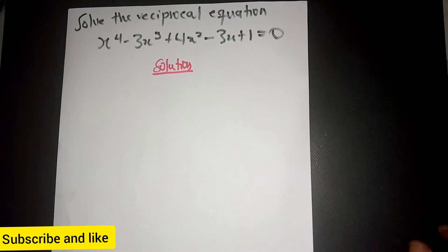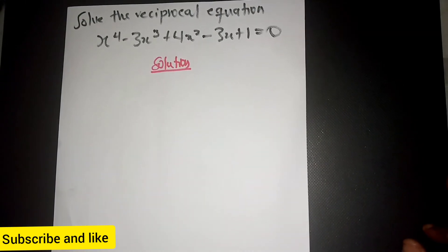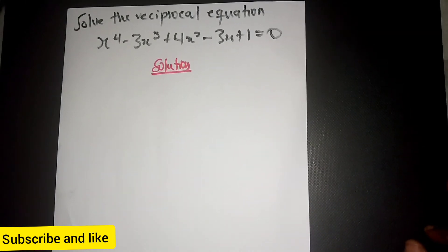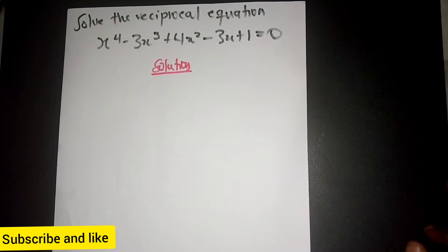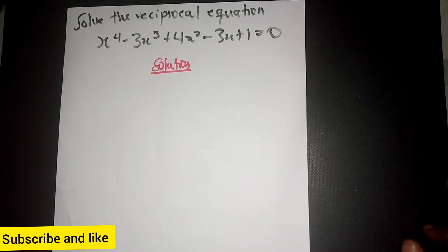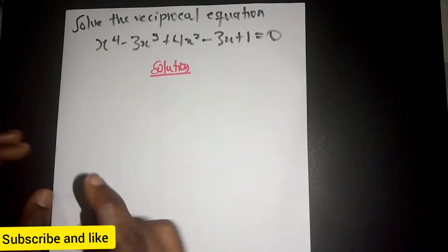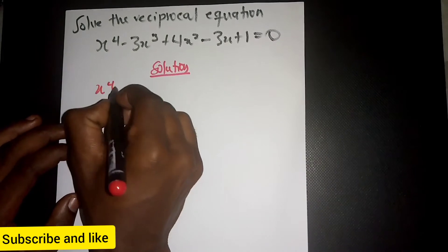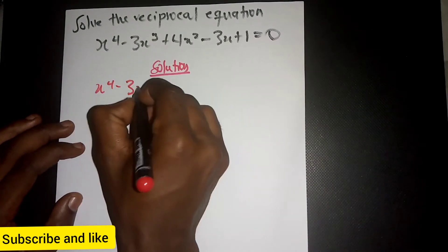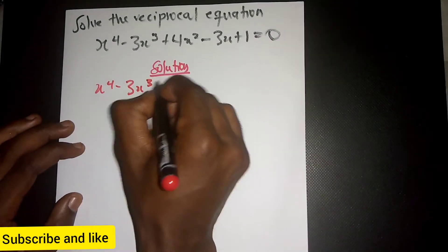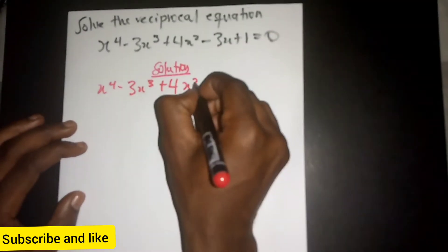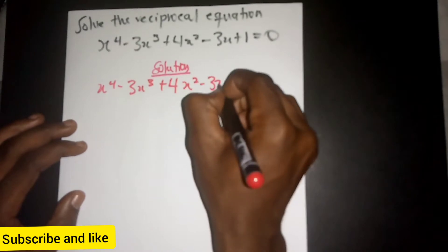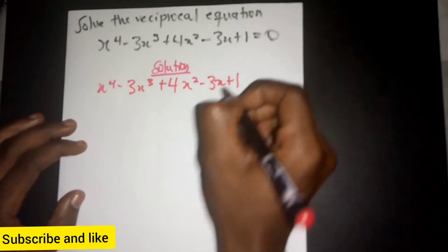Hello everyone, welcome once again. We have a reciprocal equation, and we have to find the solution to this expression: s to the power 4 minus 3s cubed plus 4s squared minus 3s plus 1.